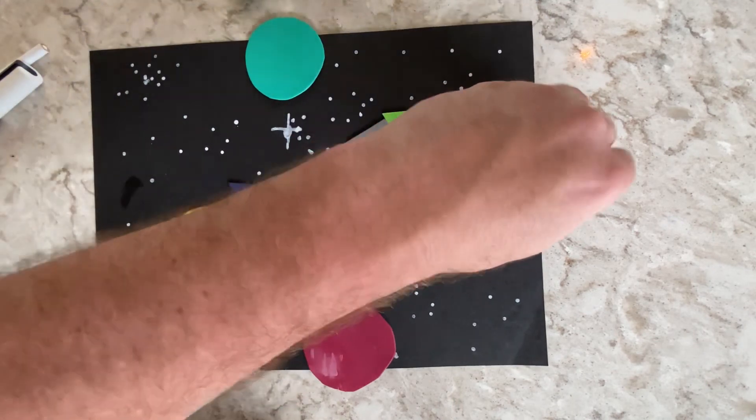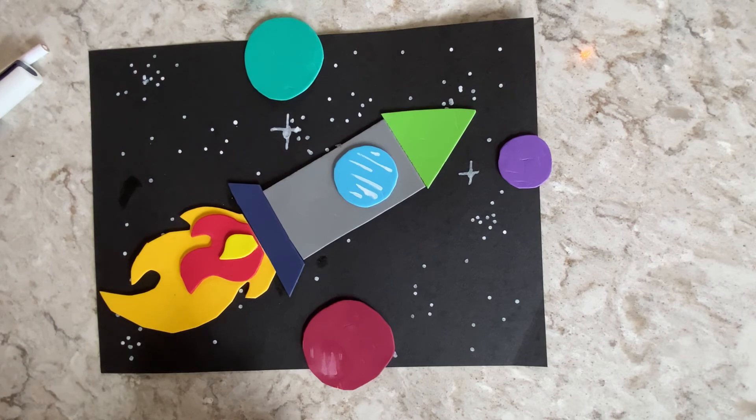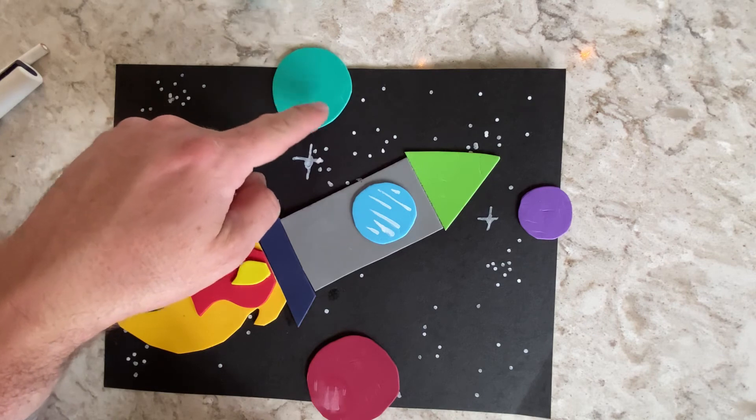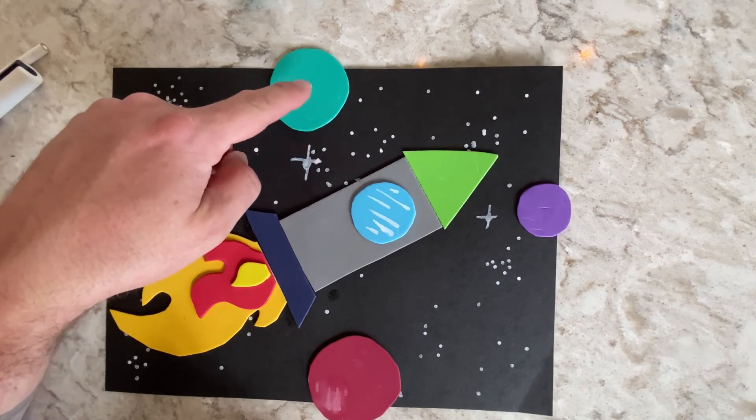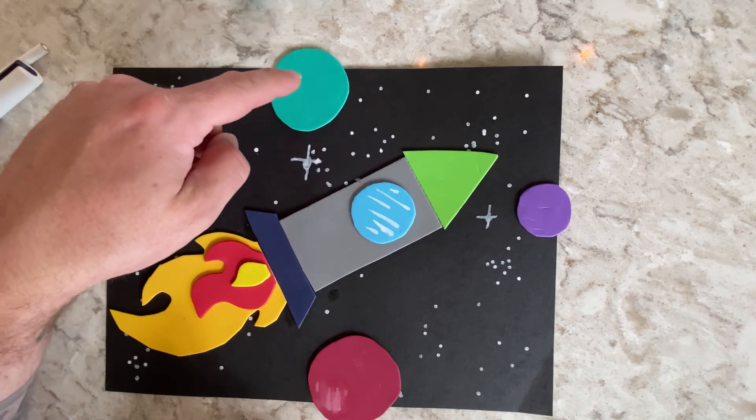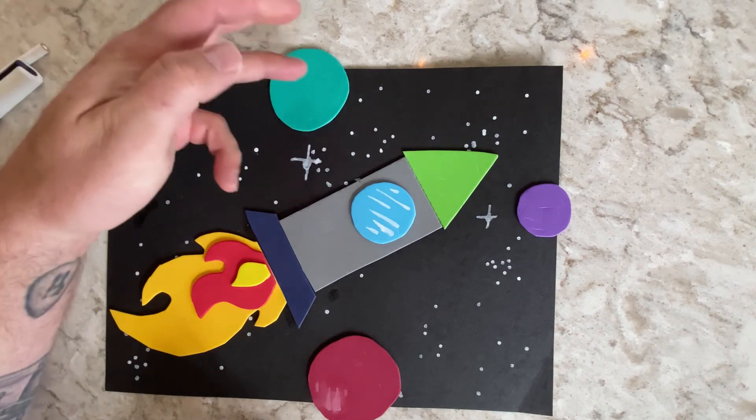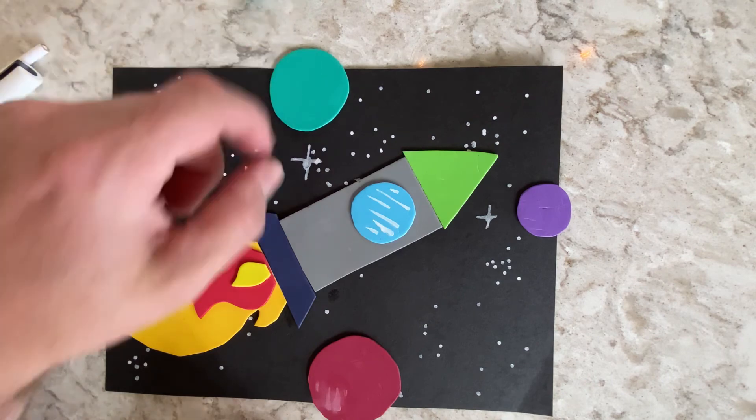Now, if you have colored pencils or markers or anything like that, you could take them and you could color in these planets. You could put some clouds and some land masses, continents like the Americas or Africa, things like that. Like, maybe this is planet Earth.